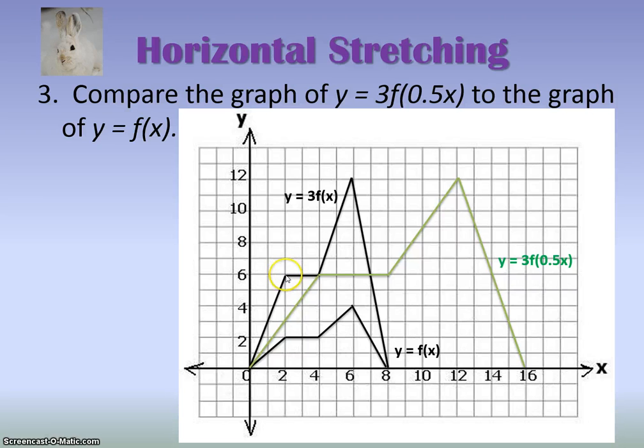So if we had this guy right here as an x value of 2, it's going to be at the same height, but it's going to be at an x value of 4. This one has a coordinate of 6 and 12. It's now going to be 12 and 12, and so on. And then we'll go ahead with this.